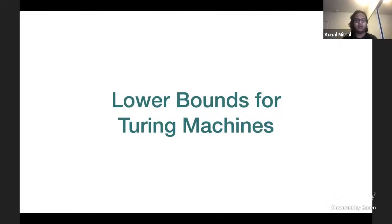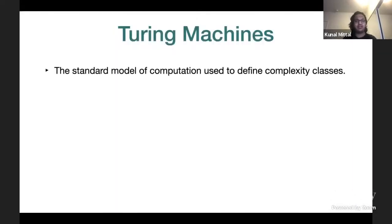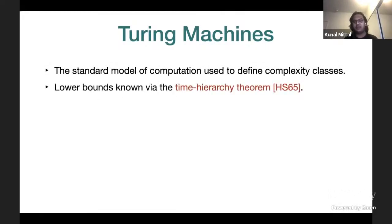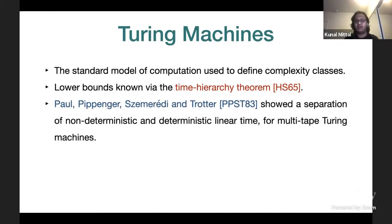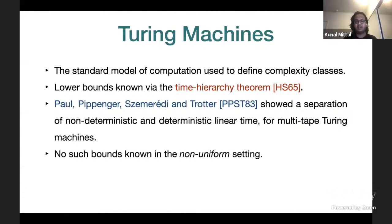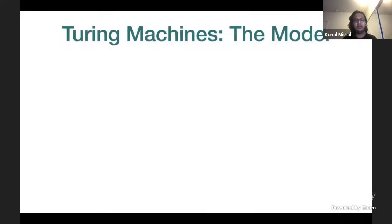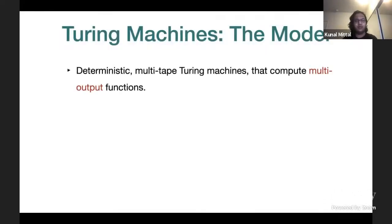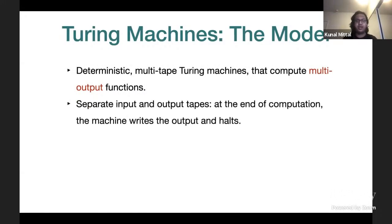Turing machines are the standard model of computation used to define complexity classes. Lower bounds for Turing machines have long been known by the time hierarchy theorem. Paul, Pippenger, Seiferas, and Trotter also showed a separation between non-deterministic and deterministic linear time for multi-tape Turing machines, but no such results are known in the non-uniform setting. The model we are interested in is deterministic multi-tape Turing machines that compute multi-output functions, with separate input and output tapes.